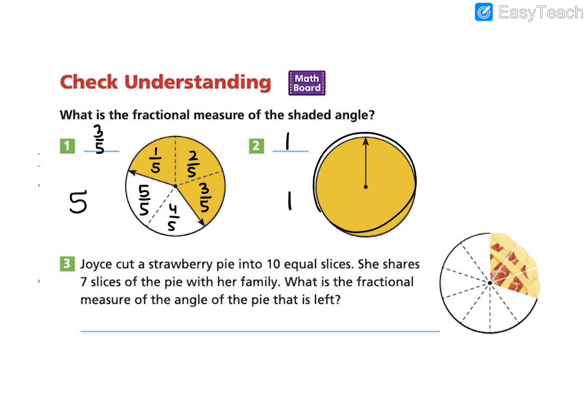Joyce cut a strawberry pie into ten equal slices. She shares seven slices with her family. What is the fractional measure of the angle of the pie that is left? Well, we know that there are ten unit angles here. So each of these pieces is one-tenth. So the fractional measure of the angle of the pie that is left is three-tenths.